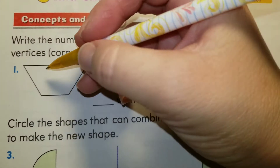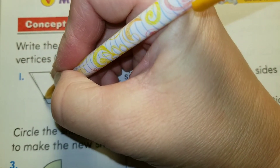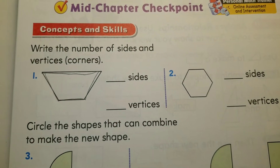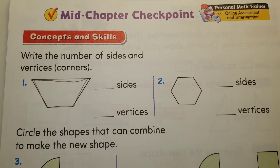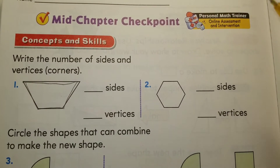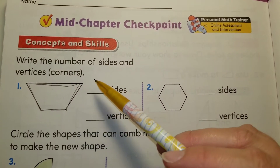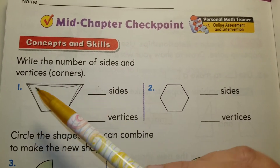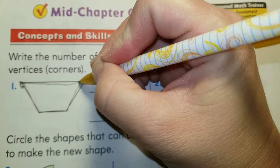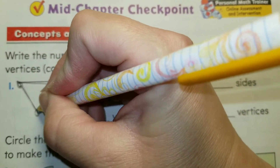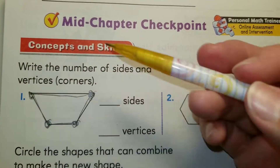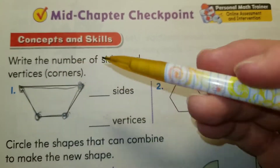How many sides does this shape have? The shape has one, two, three, and four sides — you have to write the number. The trapezoid has four sides. How about the vertices? How many vertices does it have? Count the vertices and write it down. You're going to count how many vertices there are and write the number.